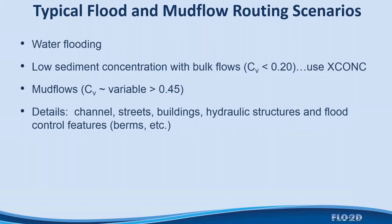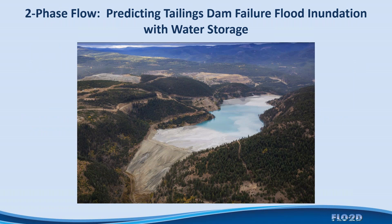A typical flood and mudflow routing downstream of a tailings dam will include possible water flooding initially — just to get an idea of the potential area of inundation — then a low-concentration bulk flow, then the mudflows and mud floods. All relevant downstream details such as channels and hydraulic structures can be included.